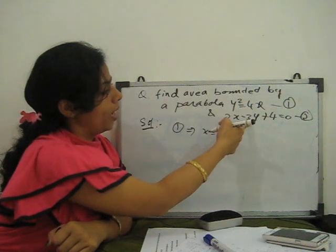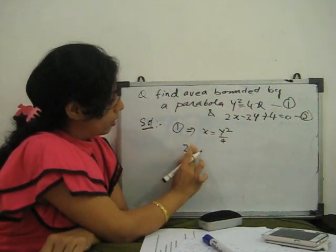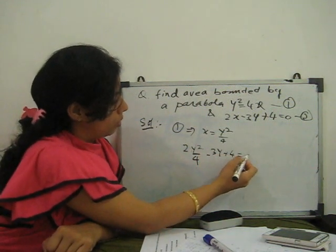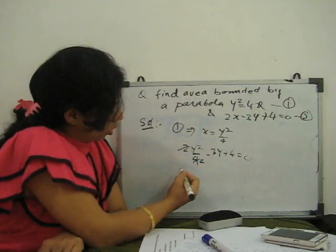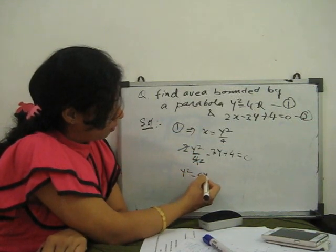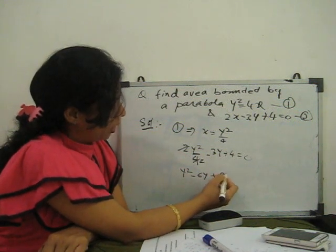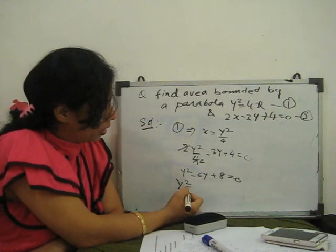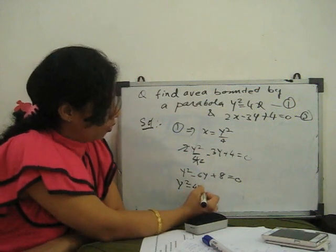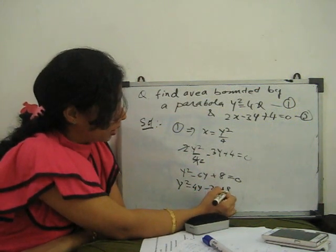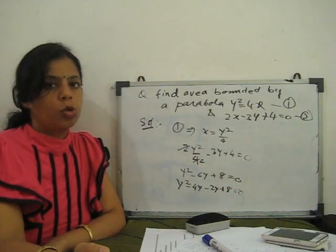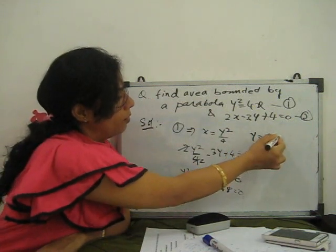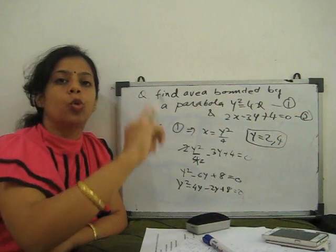Substituting x = y²/4 into the line equation: 2(y²/4) − 3y + 4 = 0, which simplifies to y² − 6y + 8 = 0. Factoring: (y − 2)(y − 4) = 0, giving roots y = 2 and y = 4. So y varies from 2 to 4.